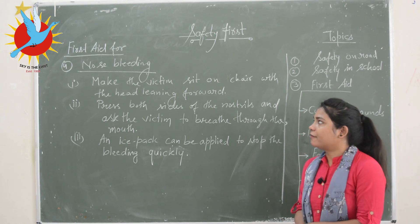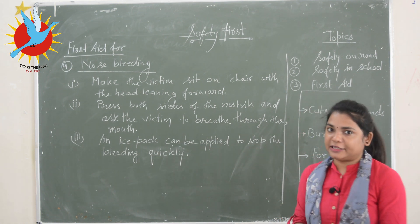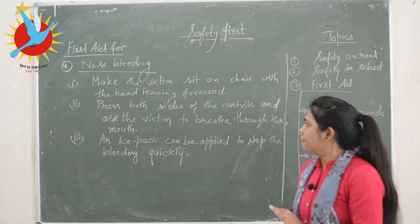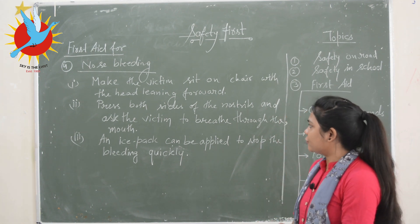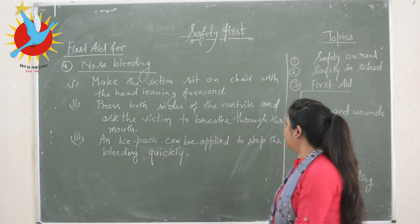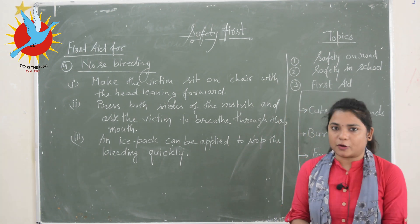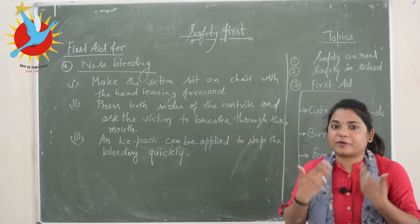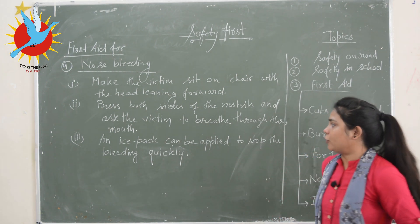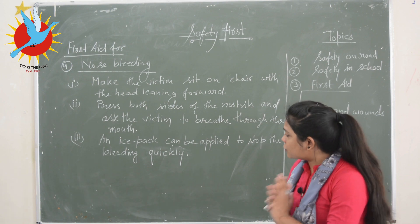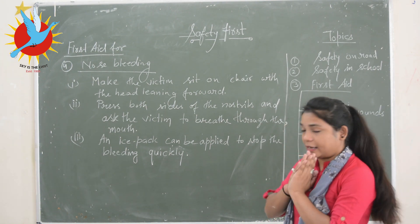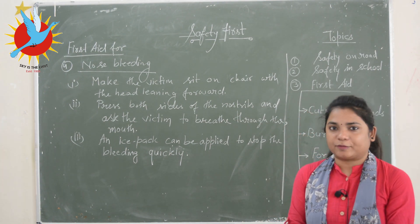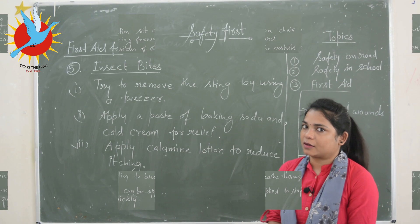First aid for nosebleeding: step one — make the victim sit on a chair with the head leaning forward. Step two — press both sides of the nostril and ask the victim to breathe through the mouth. Step three — apply an ice pack to stop the bleeding immediately.